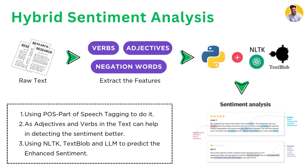So all three approaches — NLTK, TextBlob, and LLM — share the same problem: the neutral segment always gets more proportion than positive or negative. To address this, I try another technique: combining all methods and using part-of-speech tagging to predict sentiment specifically based on adjectives, verbs, and negative words only.